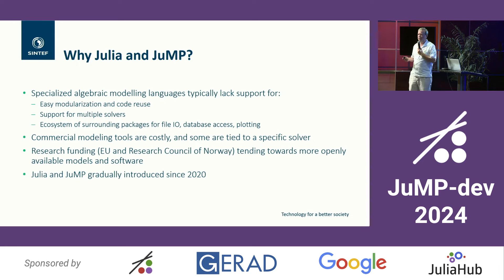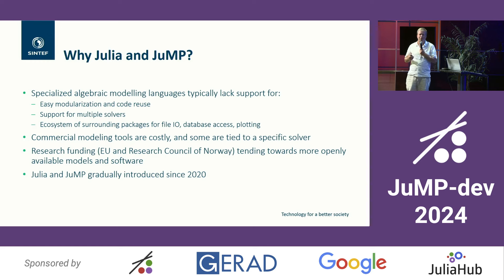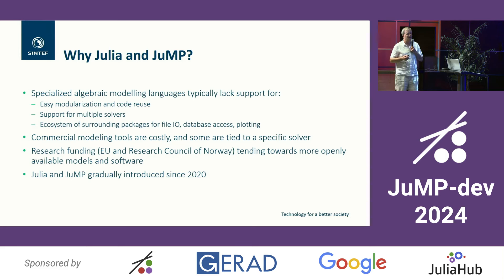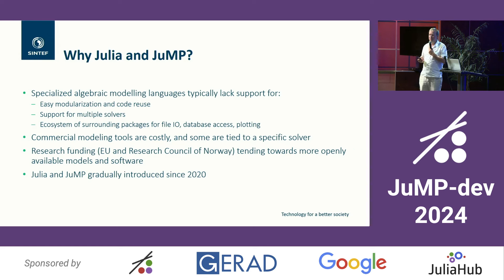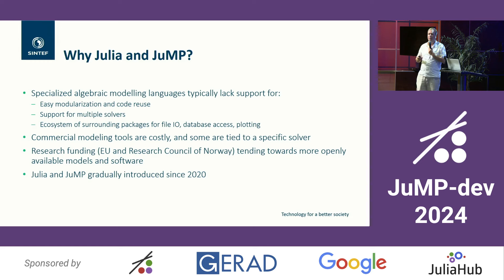So why then Julia and JuMP — what sort of attracted us to this? What we always lacked in quite a lot of these modeling languages was that we ended up with very complex, monolithic models. It's not easy to modularize things. It's a very global perspective on the modeling. And when you get models that are 10,000 or 15,000 lines in one single file, you have a maintenance problem. It's hard to reuse code, so it's hard to reap the benefits of previous modeling work when you're doing a new model — you basically start from scratch.